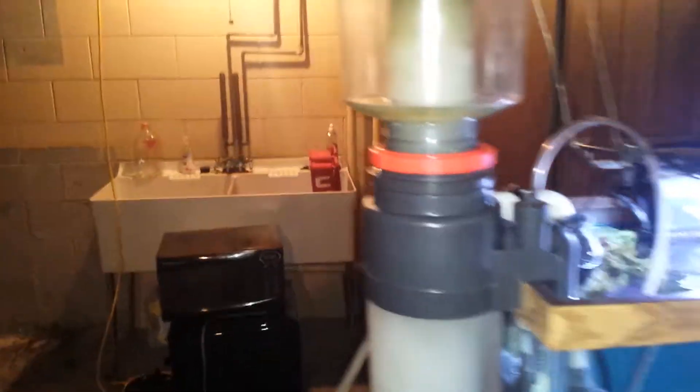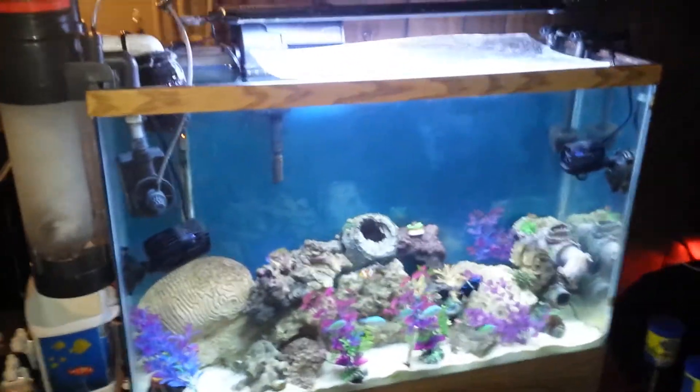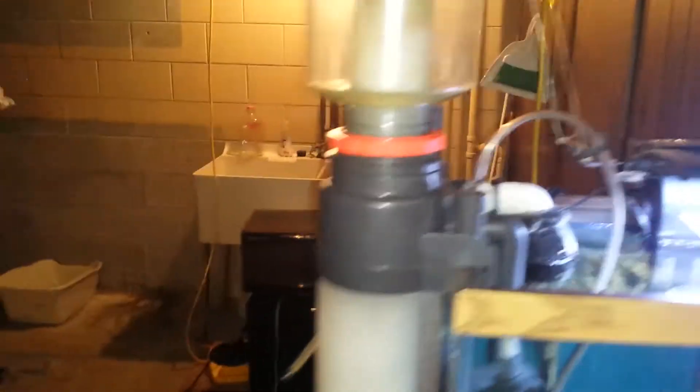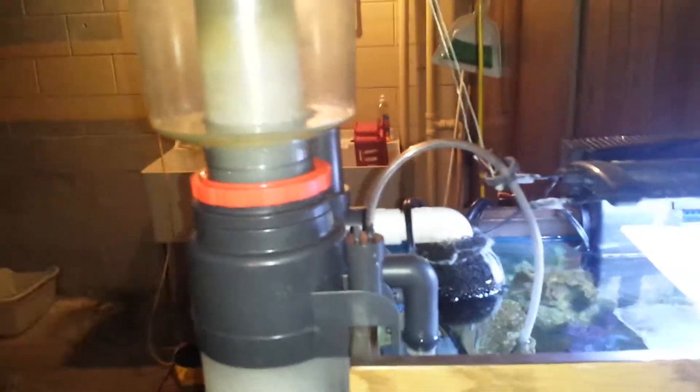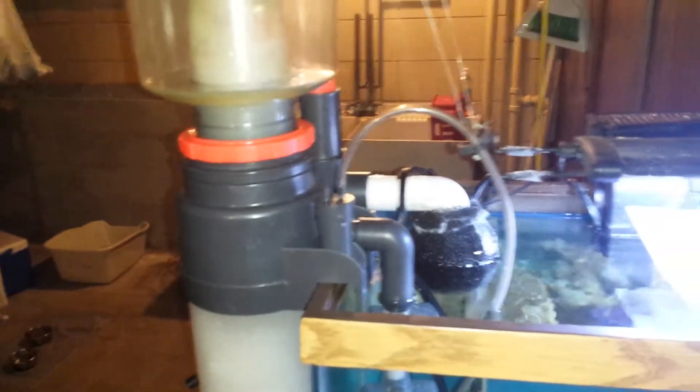So this is the Coral Life 125G Super Skimmer. A little OP for this tank, but once I move out of this house, I'm designing a sump, which it's already designed. Just got to get the new tank and everything, and I'll be building that. But for right now, I'm just doing the hang-on way.